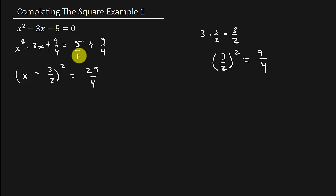So now we square root both sides. That's x minus 3 halves equals plus or minus the square root of 29 over 2. The square root of 29 is just square root of 29. You can't simplify that any. And then the square root of 4 is 2.